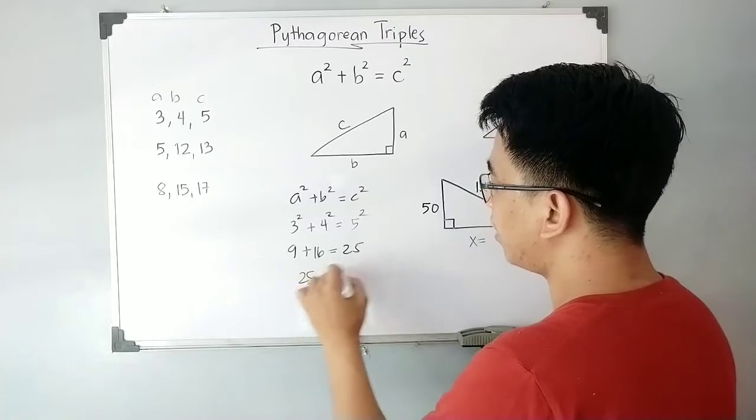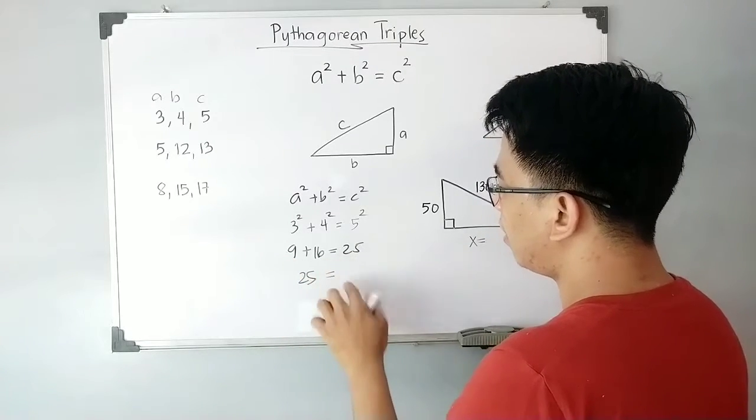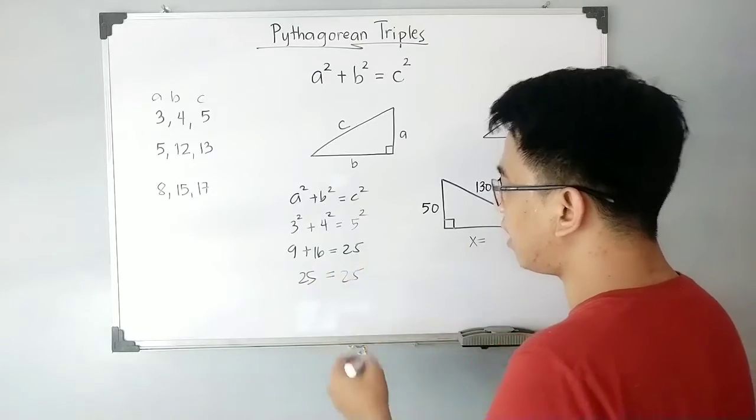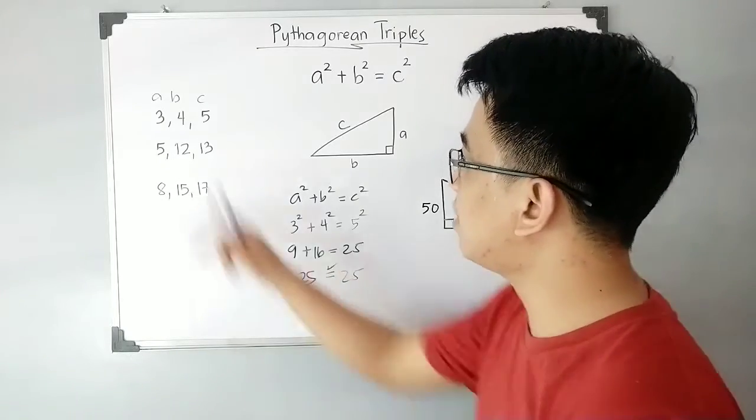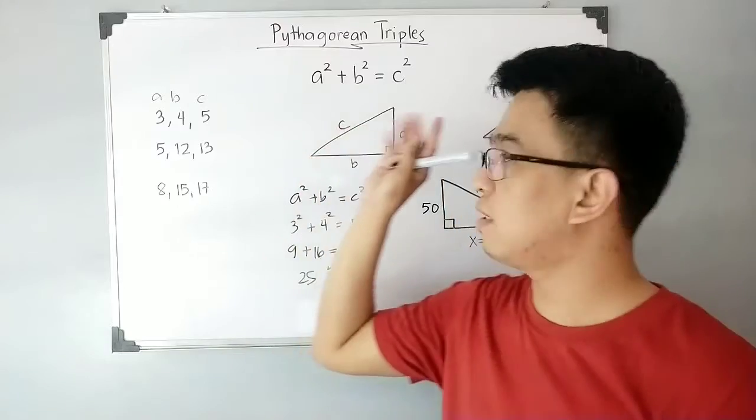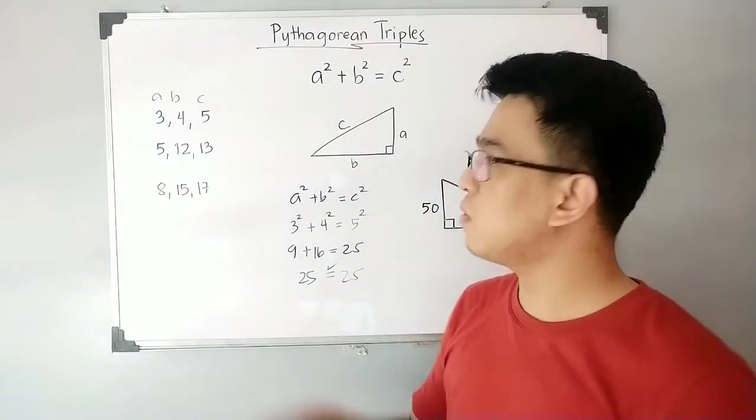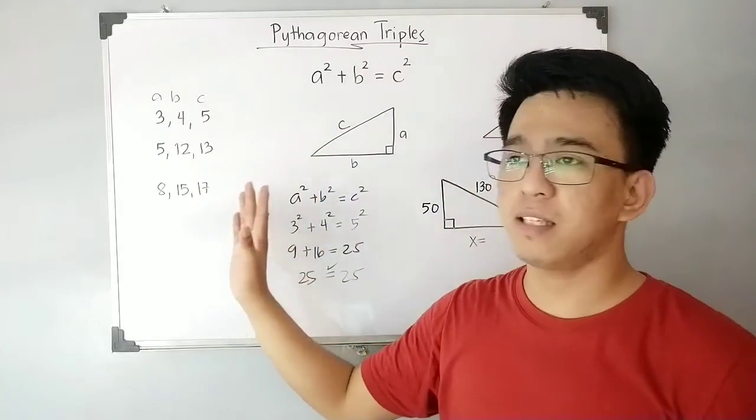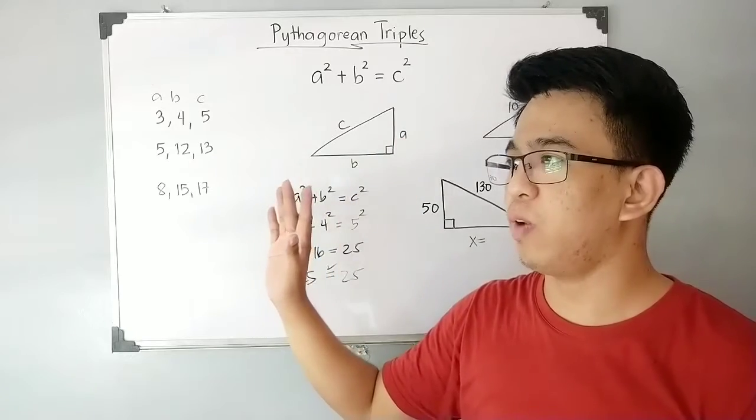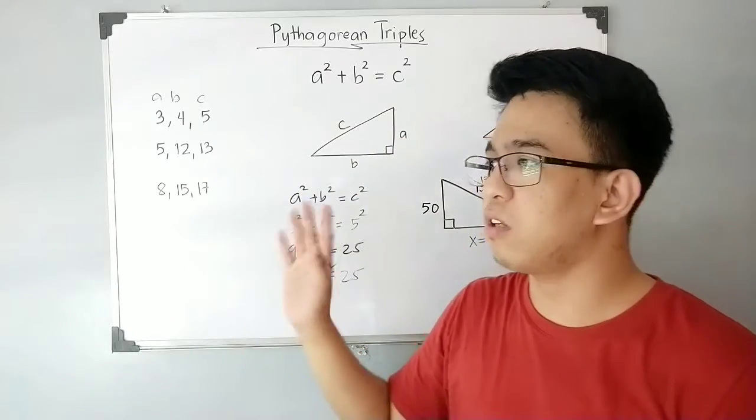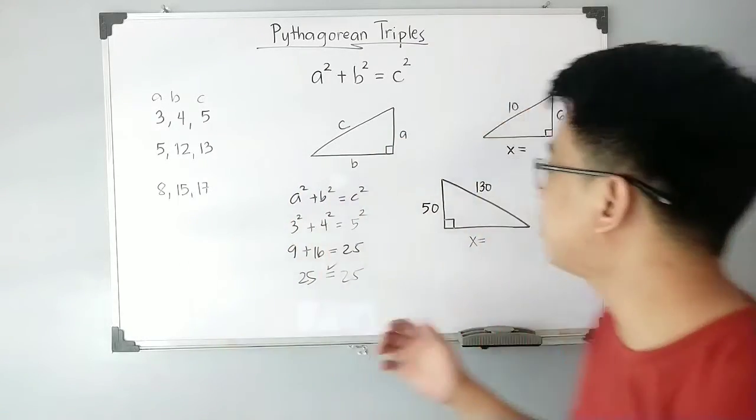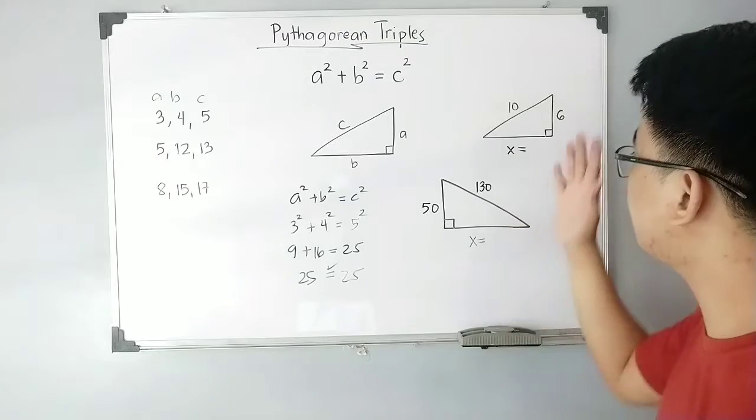They are equal, meaning these numbers are Pythagorean triples. So how can we use that in saving time with our problems or in solving Pythagorean theorem problems? Right here I have these two triangles.